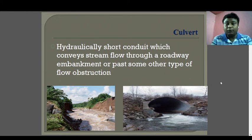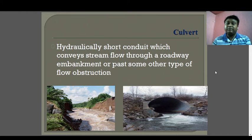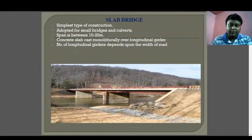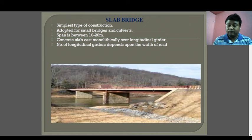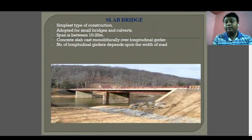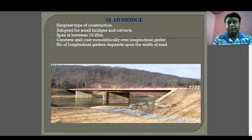A culvert is a hydraulically short conduit which conveys stream flow through a roadway embankment or some other type of flow obstruction. It is provided so that water can flow from one portion to another. A slab bridge is a simple type of bridge with only a single span. The same type of slab used in rigid pavement — concrete slabs — when used in a bridge is called a slab bridge.